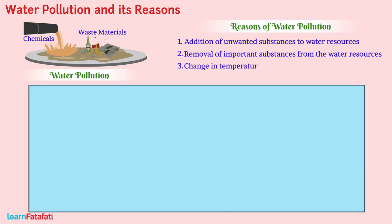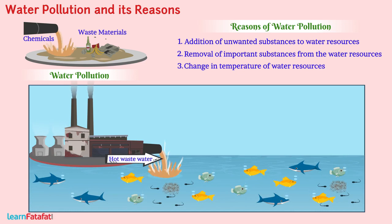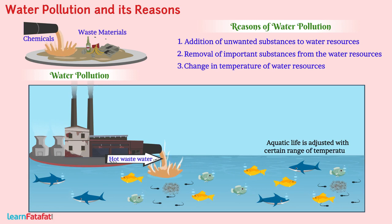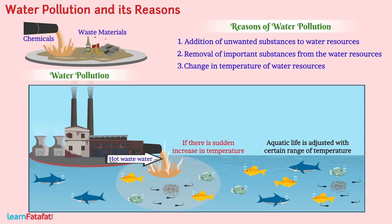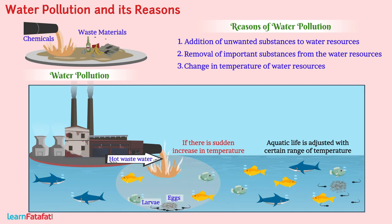A third reason is the change in temperature of water resources. Many industries pass hot waste water into water resources. Aquatic life is adjusted to a certain range of temperature, but if there is a sudden increase in temperature, it shows dangerous effects on the life of these animals. Eggs and larvae of many animals die due to sudden changes in temperature.